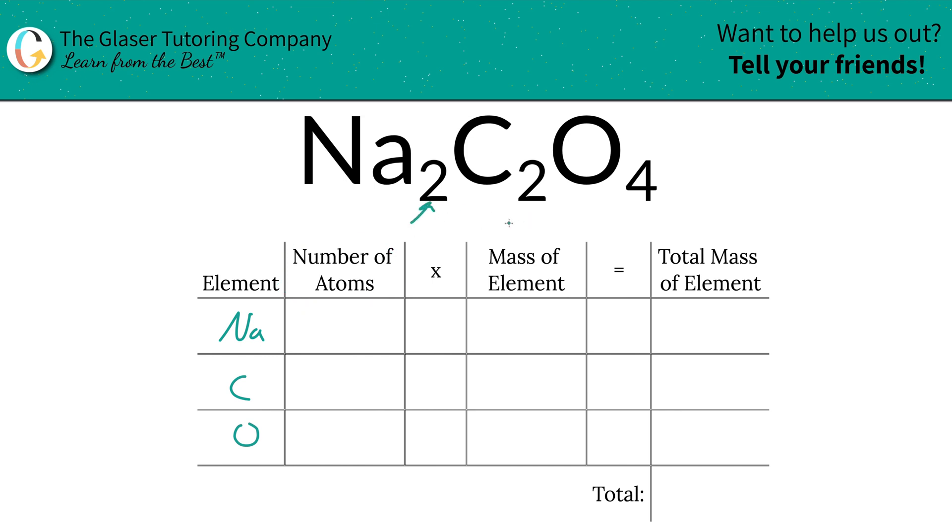Next is to identify the number of atoms, and that's where the subscripts come into play. So we've got two sodiums, two carbons, and four oxygens.